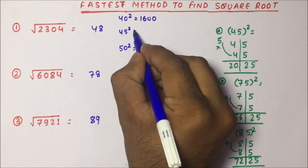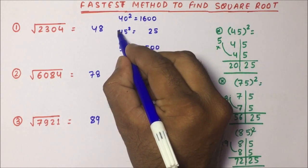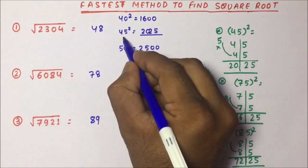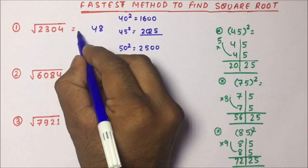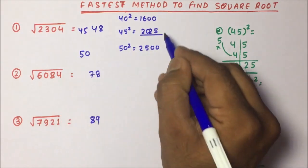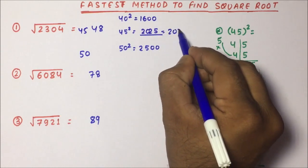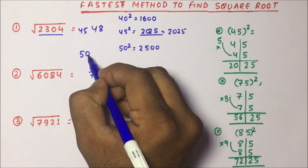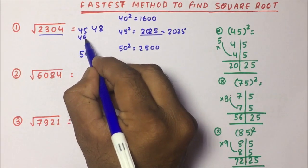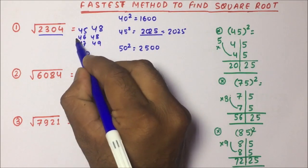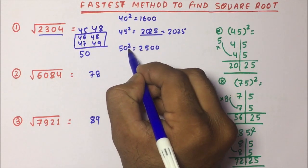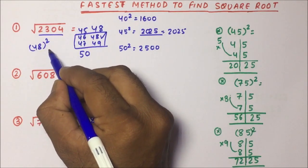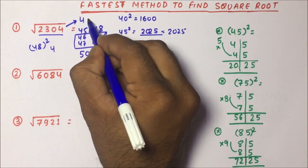Now you can easily get 45 squared: 5 squared is 25, and 4 increased by 1 becomes 5, so 4 into 5 is 20 — giving 2025. Since 2304 is greater than 2025, the square root will be in between 45 and 50. The candidates are 46, 47, 48, and 49. Which of these, when squared, gives 4 at the end? That is 48, because 8 squared gives 4 at the end. So the square root of 2304 is 48.